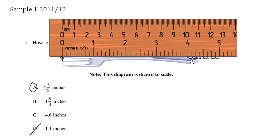But what we have here is from here to here, which is 3 eighth of an inch. So choice A is the correct answer.